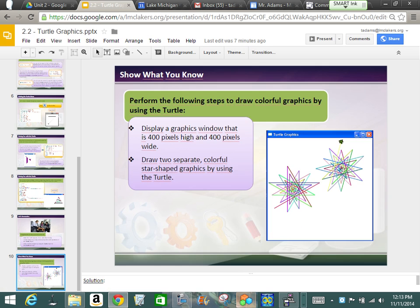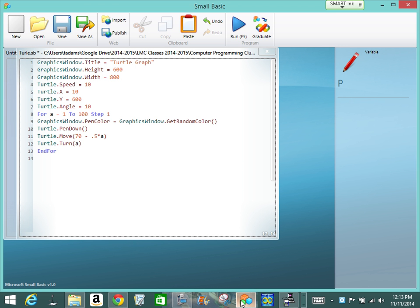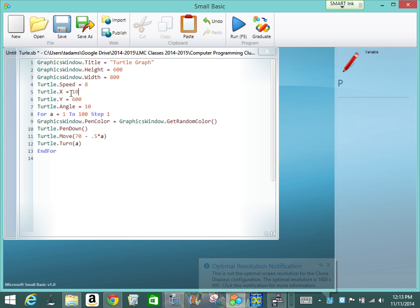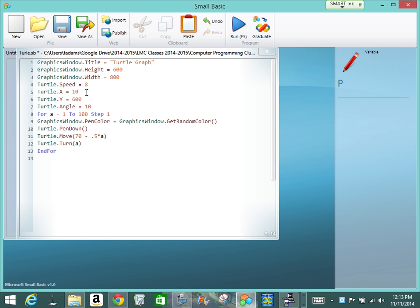So, let's do that. I've written a program. And so, let me tell you what this does before we run it. It starts the graphics window. The dimensions of my window is 600 by 800. I'm going to set the turtle speed to 8. And then, I'm going to start 10 pixels to the right and go down 600 pixels. And then, I'm going to start with the angle of the turtle at 10 degrees.